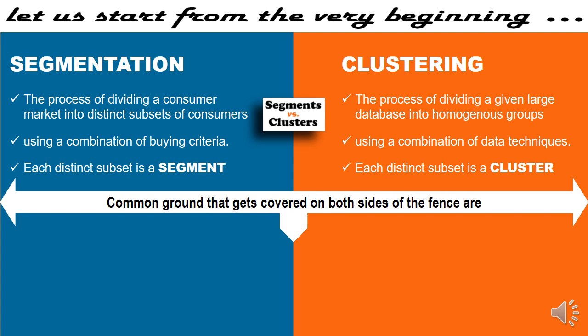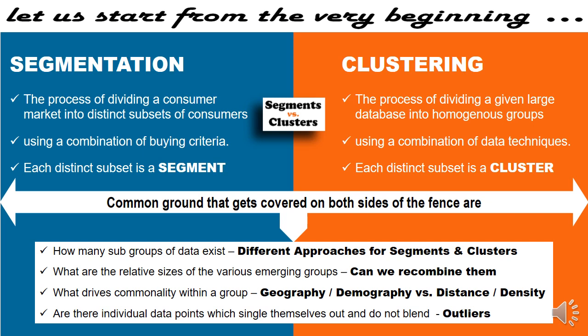The common ground that gets covered on both sides: remember, this is an unsupervised learning model and there is no a priori information on how many subsets are going to exist — how many segments, how many clusters, what is the relative size, is recombination possible, can clusters merge to become super clusters? What is driving commonality — is it geography, demography in segmentation, or distance between points and density of points in clustering? Also remember that in any system there will be points that do not blend at all; they stay outside all clusters and are called outliers.